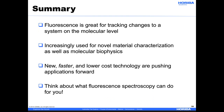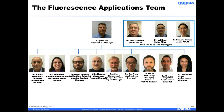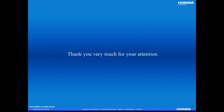In summary, fluorescence is great for tracking changes to a system on the molecular level. It is increasingly used for novel materials characterization and has continued to be widely used in molecular biophysics. New, faster, and lower-cost technologies such as sources and electronics are pushing new applications forward in the field of fluorescence. Please think about what fluorescence spectroscopy can do for you. At Hariba Scientific, besides providing high-quality instrumentation, we have a vast amount of knowledge and experience in our fluorescence applications team. With facilities in Edison, New Jersey, London, Ontario, and Glasgow, Scotland, please utilize our team with your own questions and ideas. We look forward to working with you. Thank you for your attention today, and I will open up the webinar for any questions you may have.